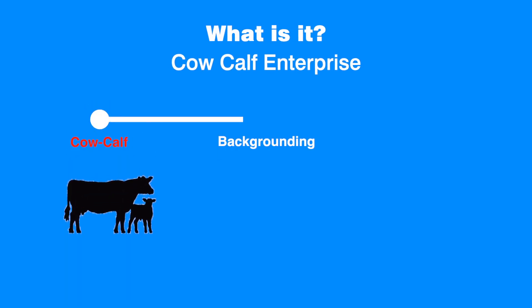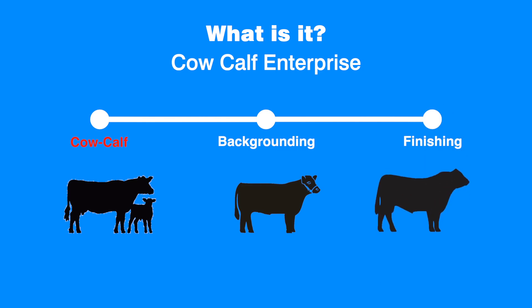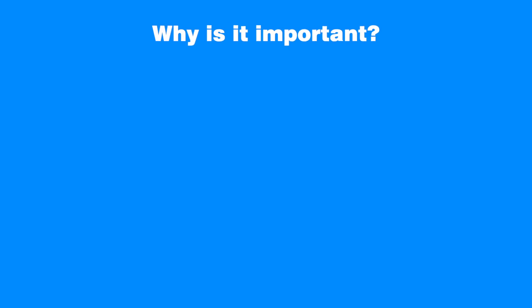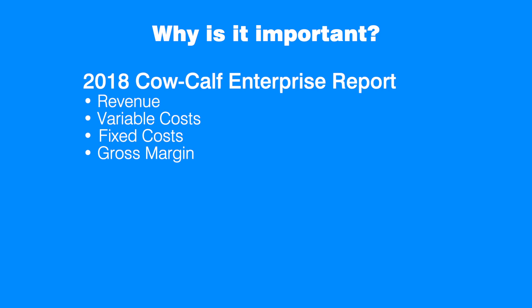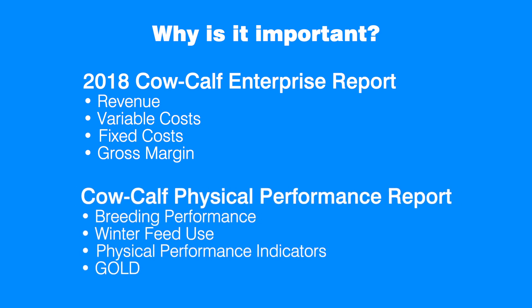The cow-calf enterprise is the first stage of beef production that includes backgrounding and finishing. This stage is comprised of breeding, calf rearing, and weaning at approximately six to eight months of age. The weaned calves are the major product for a cow-calf enterprise, and the AgriProfit's reports summarize all sources of revenue and expenses to produce and sell those calves. The generated indicators in terms of calf sales, different types of costs, and economic performance allow producers to examine the efficiency of production practices.